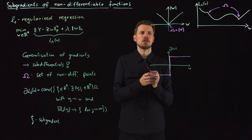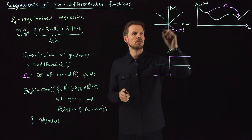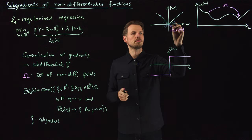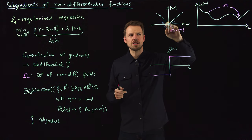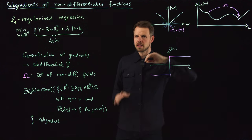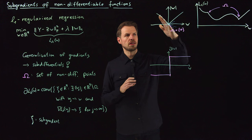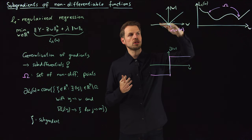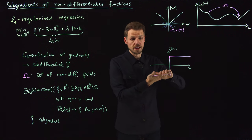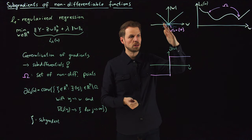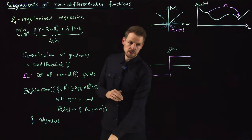This actually makes sense: at the kink of the absolute value, any tangent line with slope between minus one and plus one can be considered a tangent in that point. This is what we call the Clark sub-differential. For convex functions, one can find an equivalent definition: all lines you can fit under the function make up the sub-gradients. So all lines with slope between minus one and plus one are subgradients, and their convex hull is the sub-differential.